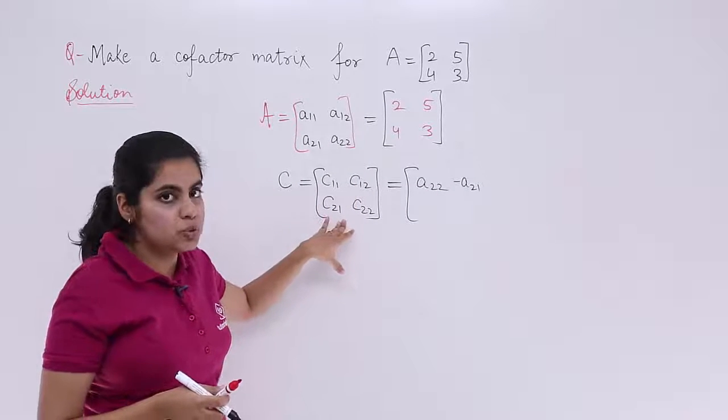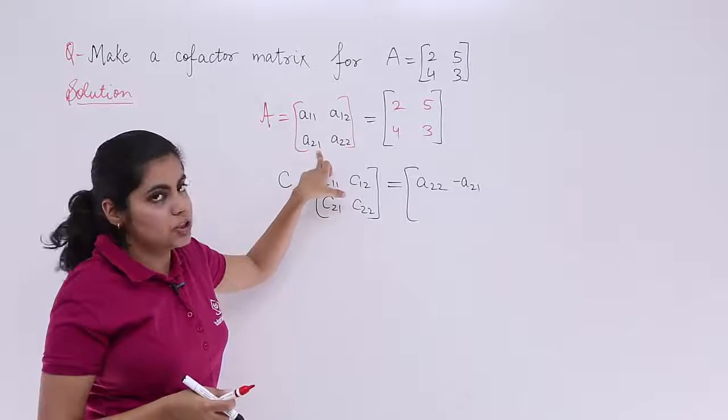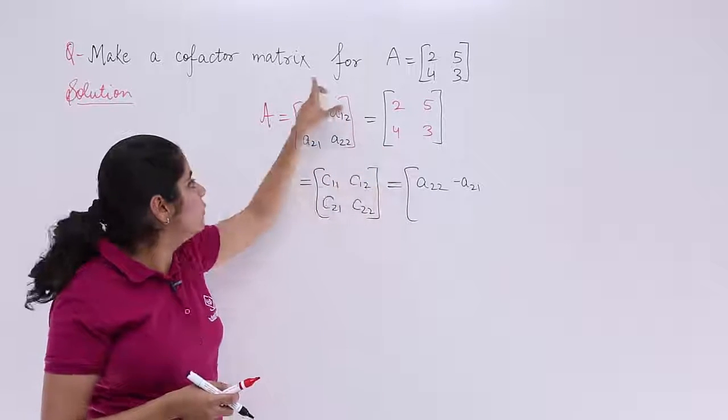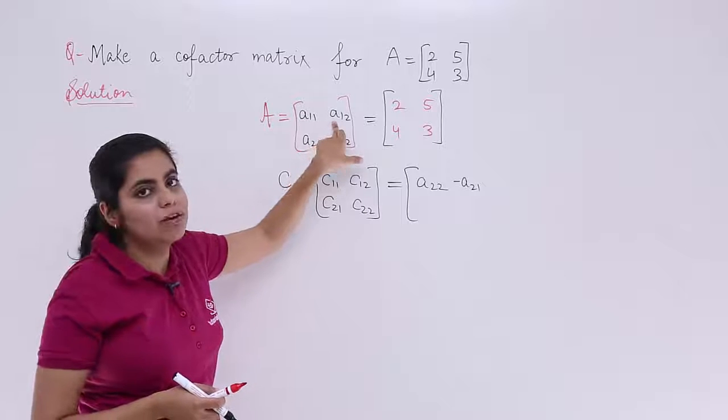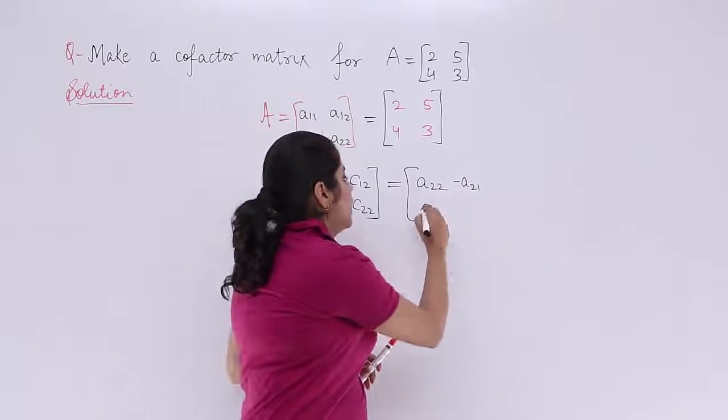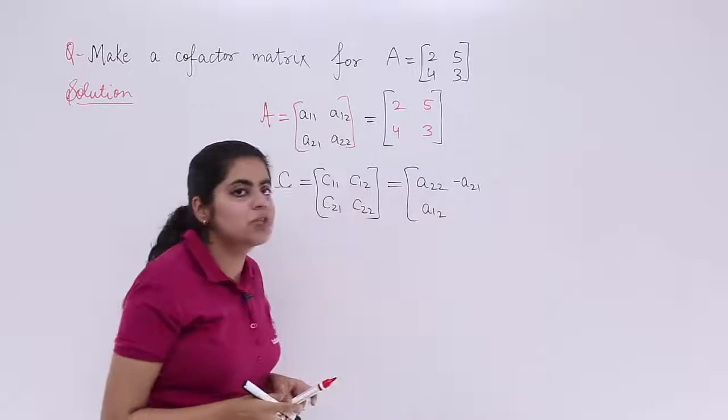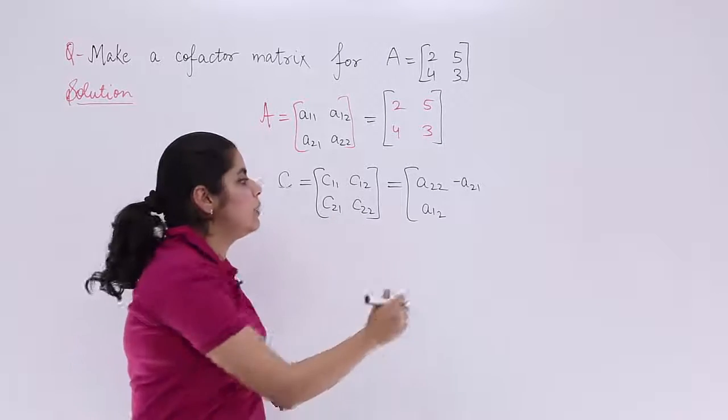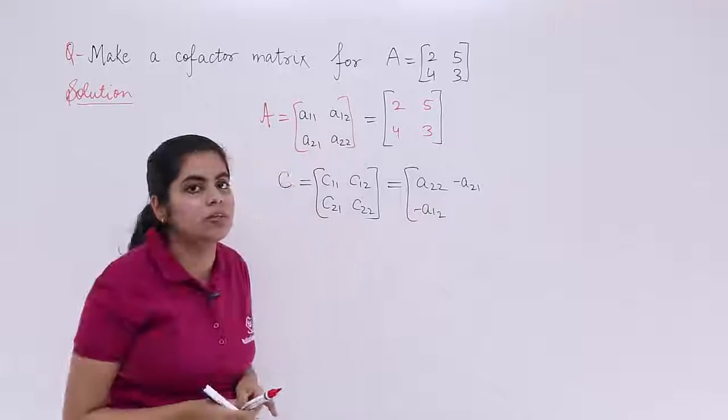Next, you move to C21. C21 related to A21. Leave the second row, leave the first column. You are left with A12. 2 plus 1 is 3. 3 is odd. Odd means negative. You place a negative sign here.